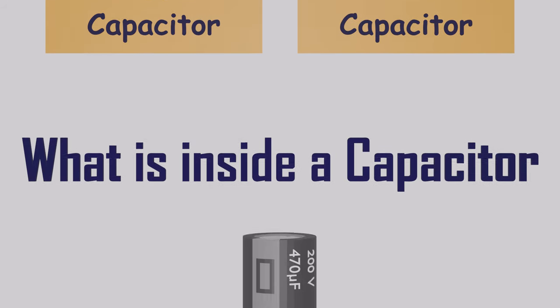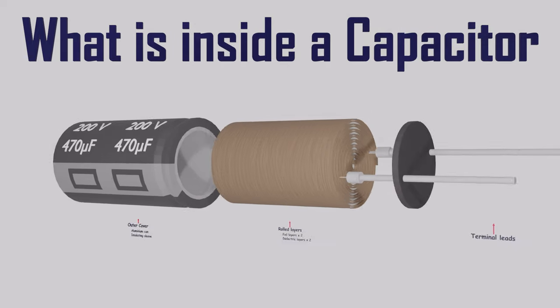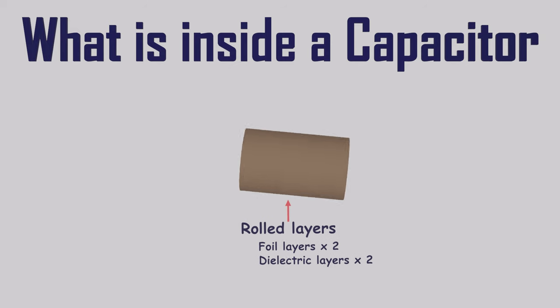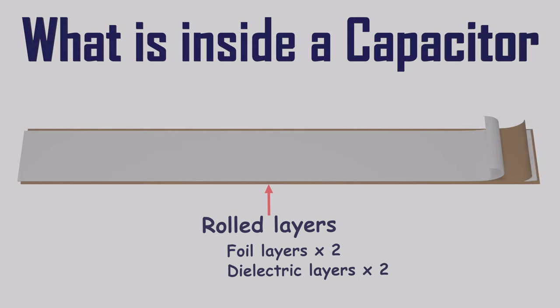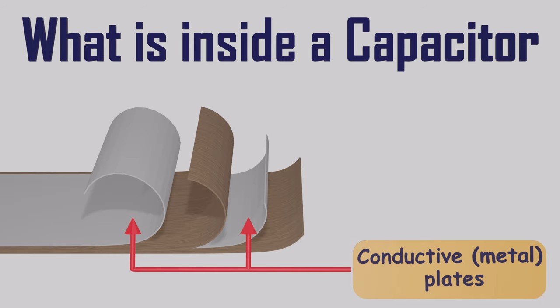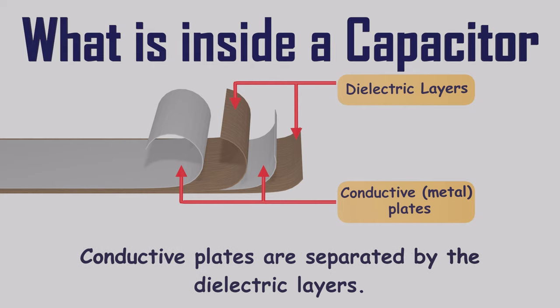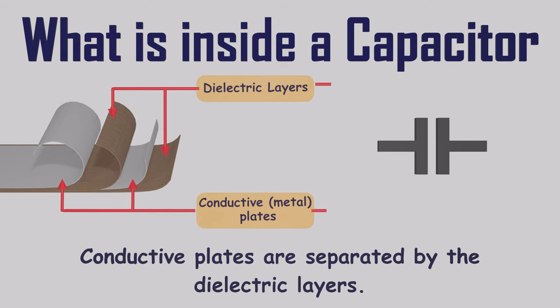Let's explore the internal components of a capacitor. By delicately removing the outer plastic label and metal cover, we can reveal multiple layers of rolled paper inside. These layers can be carefully unrolled and separated. This rolled paper comprises two or more parallel conductive metal plates, each connected to a terminal wire, which serve as connection points to the rest of the circuit. These parallel metal plates do not physically touch each other; instead, they are electrically isolated by high-quality insulating material layers, commonly referred to as the dielectric. The capacitor symbol precisely illustrates this arrangement: two parallel lines represent the conductive plates, and the space between them signifies the dielectric layer.